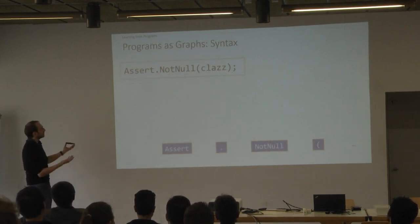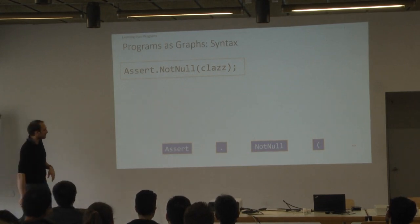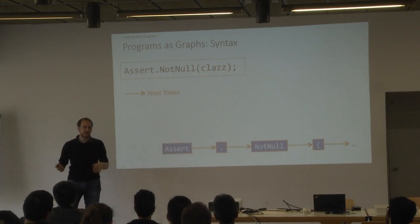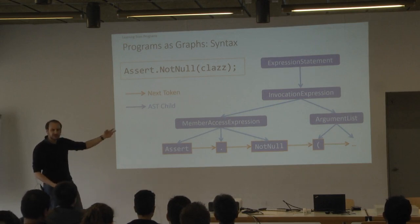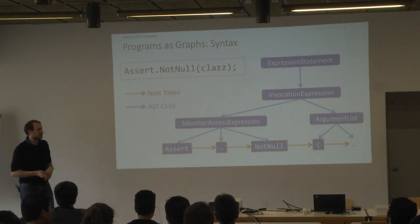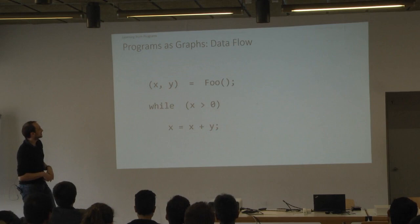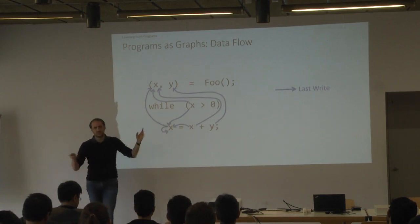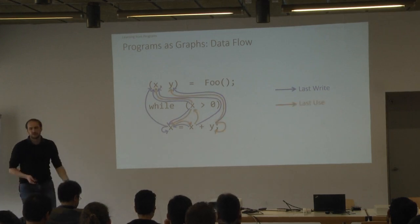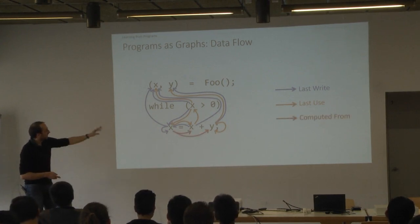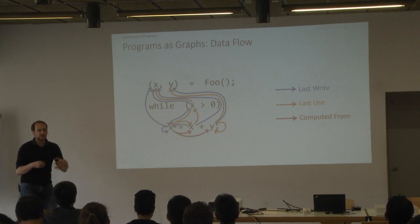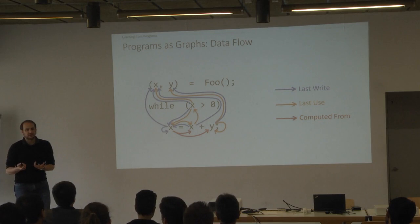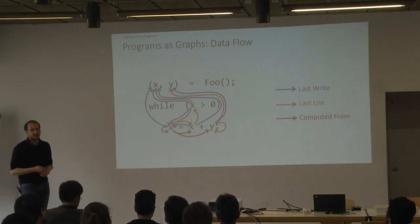To turn a program into a graph: take a little statement, run the tokenizer, turn it into a token stream, and connect these things with 'next token' edges. Then build the AST with child-relationship edges. For semantic relationships, you can look at data flow — when was this X last written, when was it last used, what is X computed from? You get more and more edges. You can take any analysis and turn it into either additional node information or a relationship edge. Maybe you might need to reason about hyperedges, but we didn't do this yet — it's not a problem to extend the method to that.